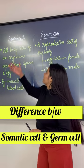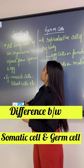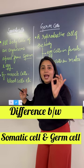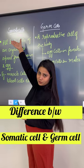The difference between somatic cells and germ cells: somatic cells are all the body cells of an organism apart from sperm and egg. All the other cells in your body are somatic cells, such as your muscle cells, blood cells, etc.